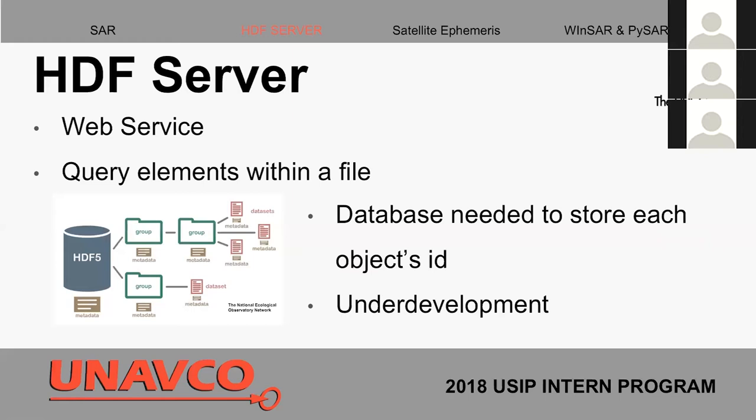Each one of these objects — the root group, the group, and dataset — in order to interact on a web platform, you need a URL for each one of these objects. You put that URL into your browser or query and acquire that object. An issue is the service doesn't actually store that information, so you need a database to hold it all. If the objective is to simplify our system and reduce redundancy, that's not really a possibility. In the future, the HDF group is doing a lot of development in this project, so we might be able to implement it later on.